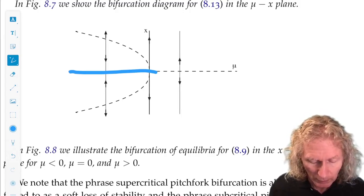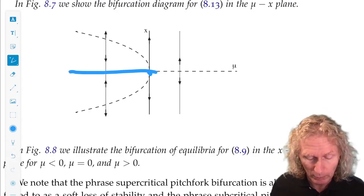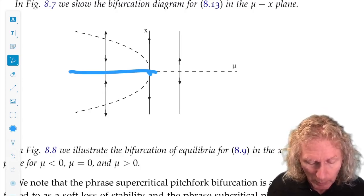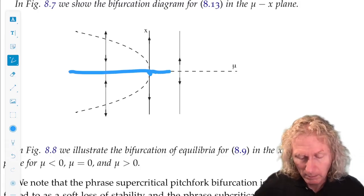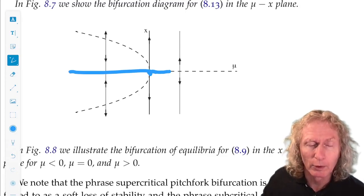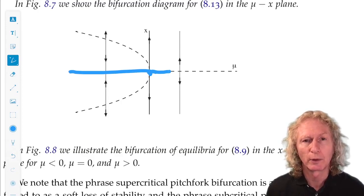As μ increases to 0, the unstable equilibria collide with the stable equilibria in a non-hyperbolic point. As we move past μ equals 0, as μ increases from μ equals 0, this is what we refer to as a hard loss of stability, the subcritical pitchfork bifurcation.